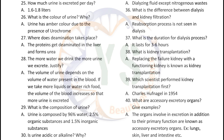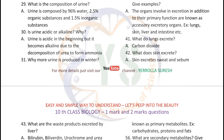Justify: The volume of urine depends on the volume of water present in the blood. If we take more liquids or water-rich food, the volume of the blood increases so that more urine is excreted. What is the composition of urine? Urine is composed of 96% water, 2.5% organic substances, and 1.5% inorganic substances.